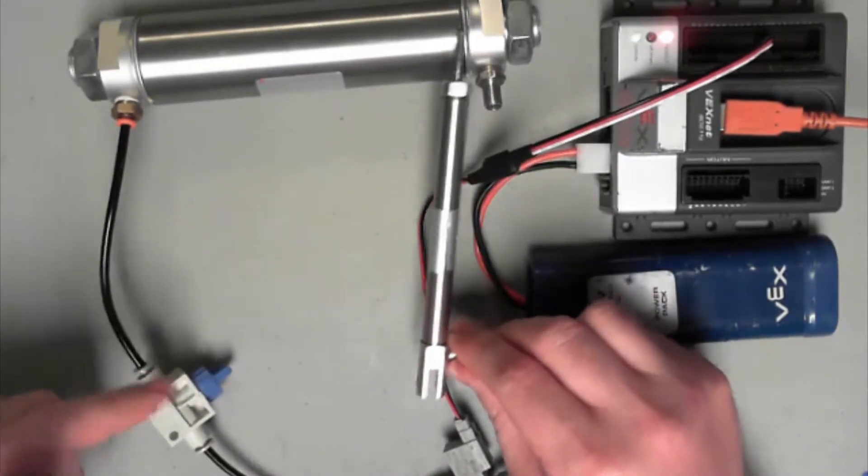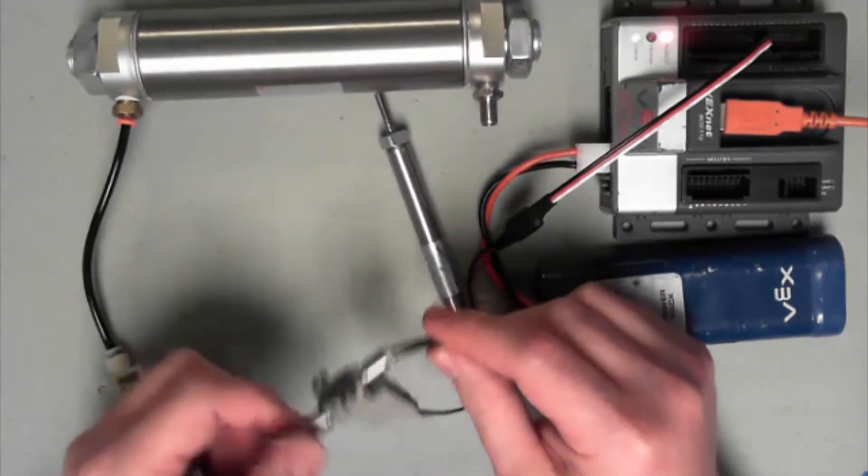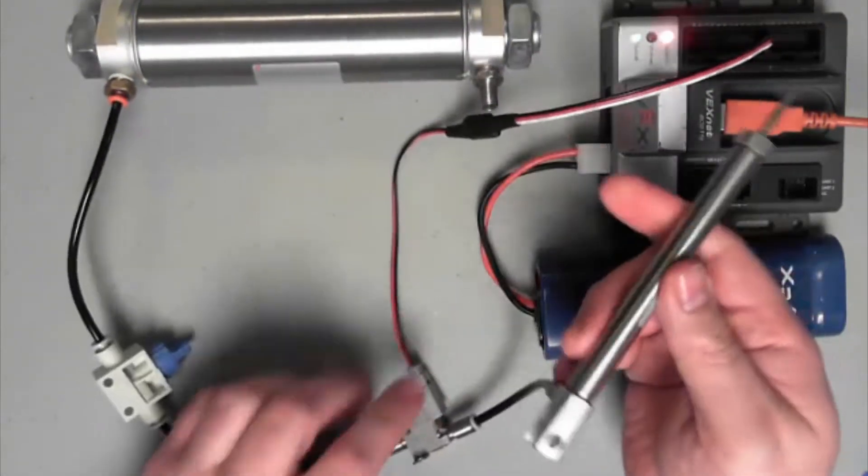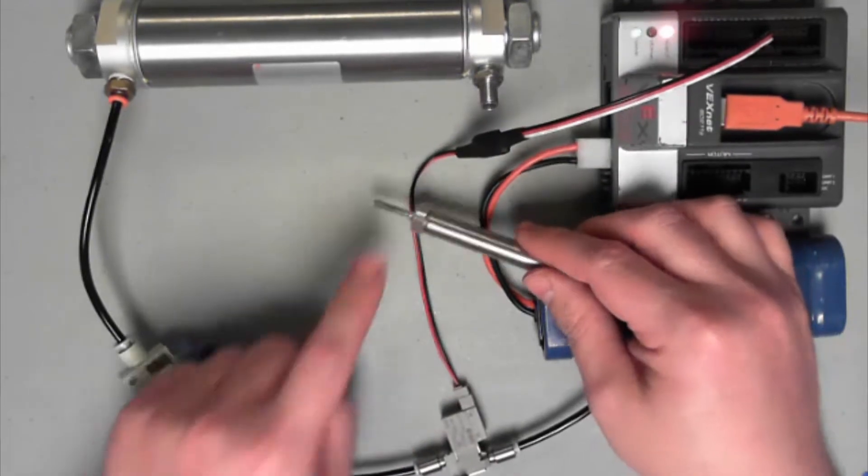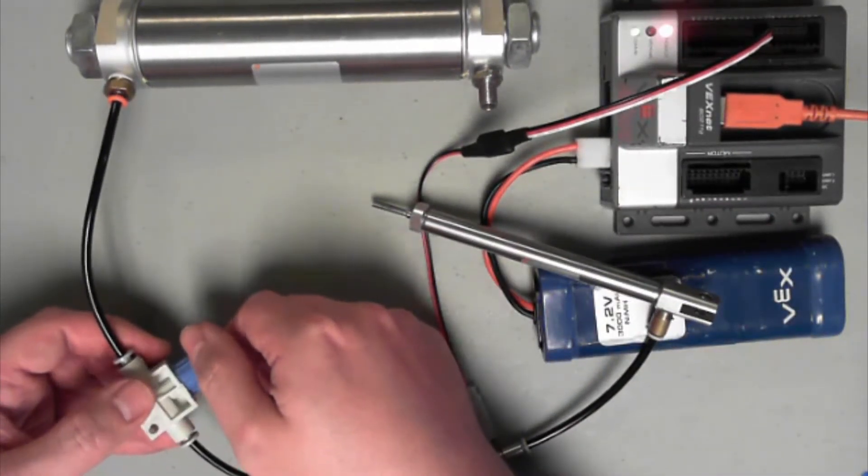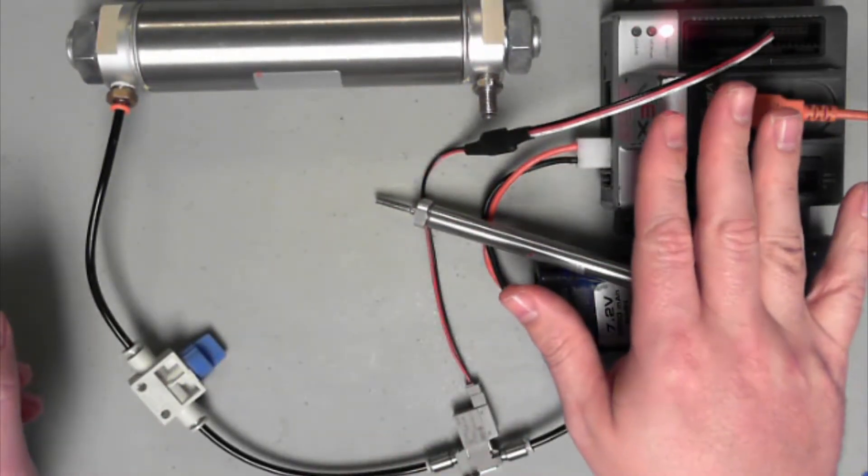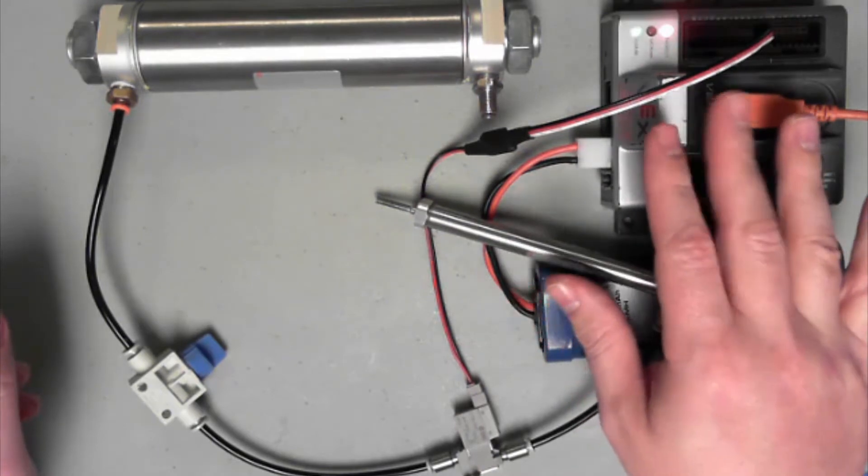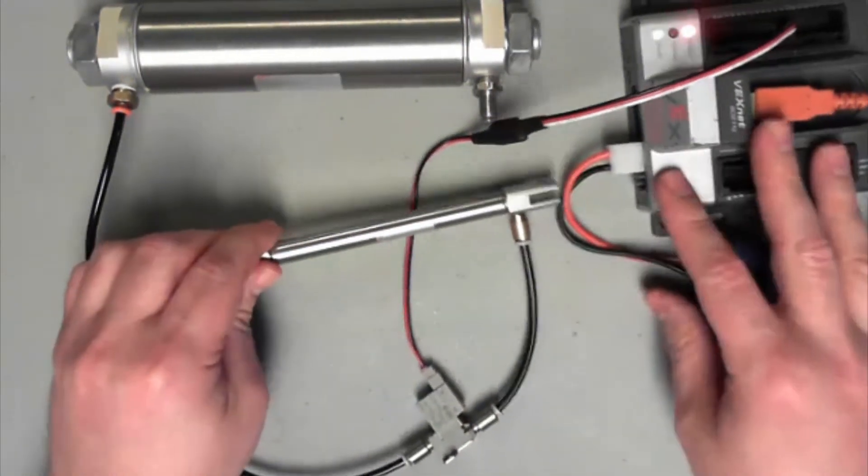So as soon as I open this up, remember this valve shouldn't do anything by default until I apply electricity to it. So as soon as I apply electricity to it, it should open that gate and allow the cylinder to come out. So I'm going to go ahead and open up my shutoff valve. Nothing has happened, and now all I need to do is hop over to Robot C and do some quick programming, and hopefully that should allow my cylinder to go in and out.